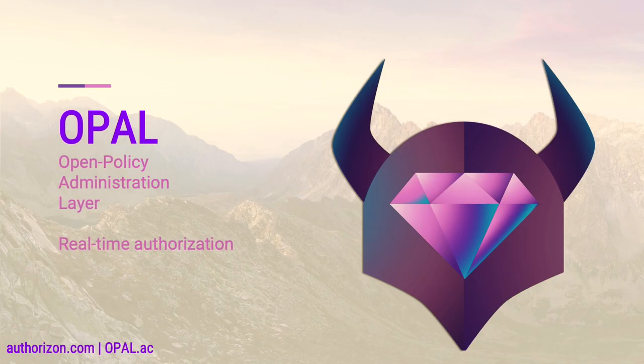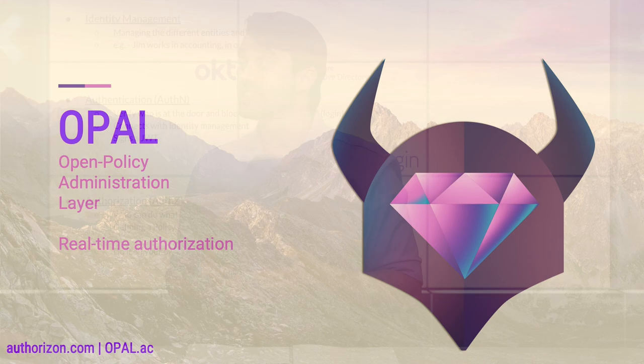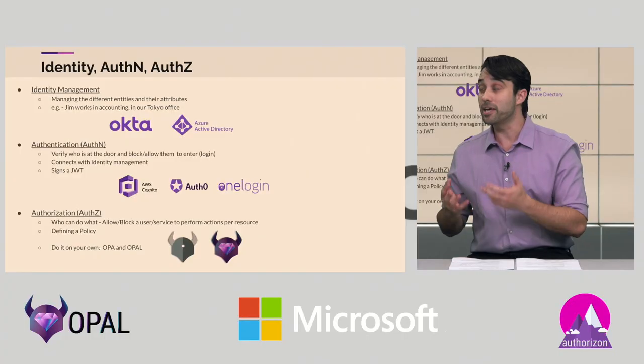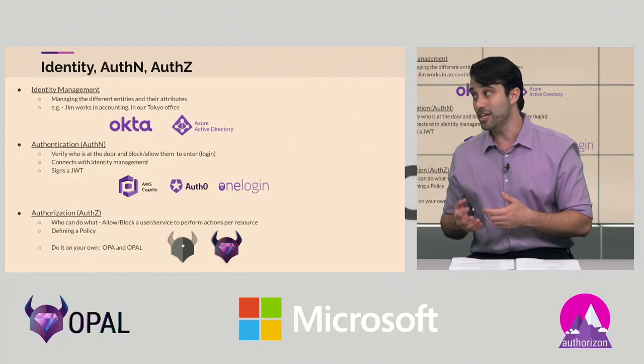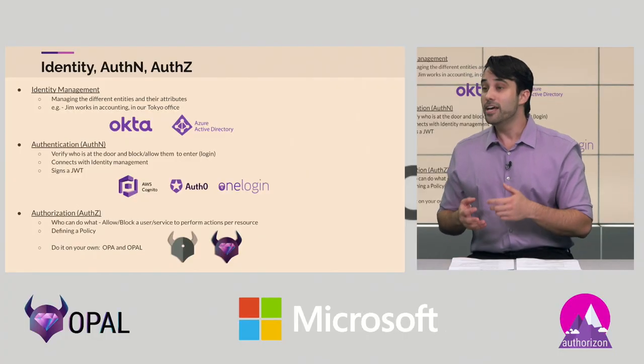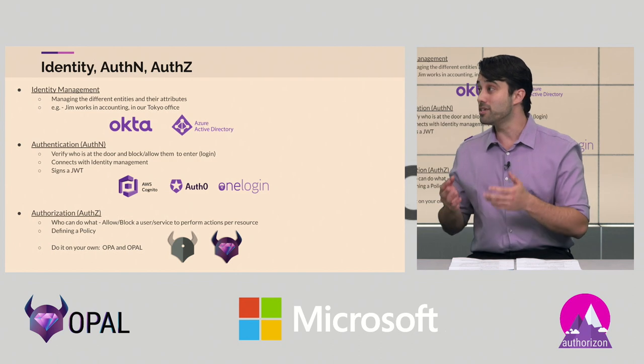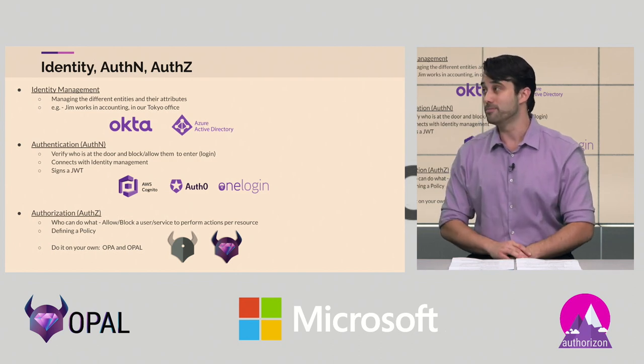First of all, it's great to be here, thanks for having us. To your question, Opal, or Open Policy Administration Layer, is an open source project that adds real-time updates to your application's authorization layer. If you're building access control or authorization, you should really take a look at Opal.